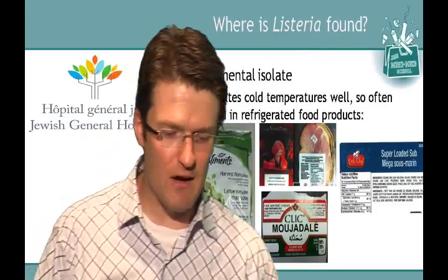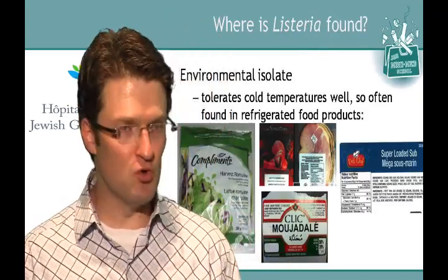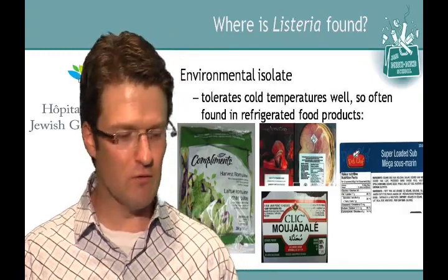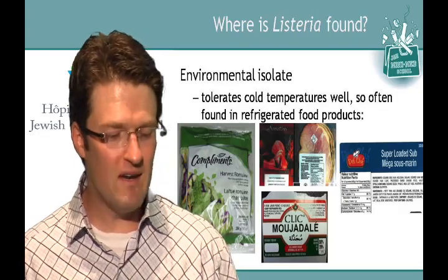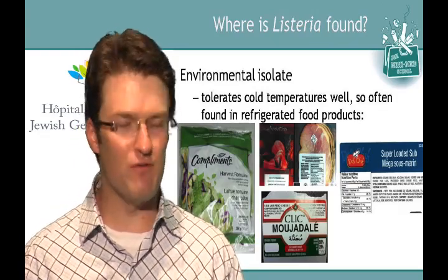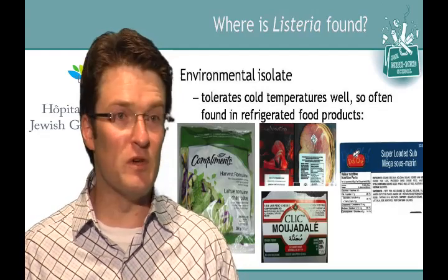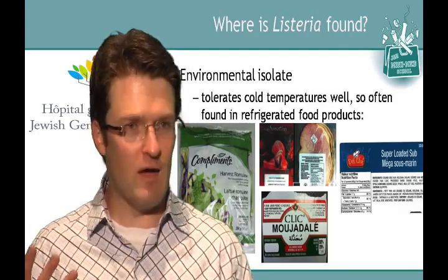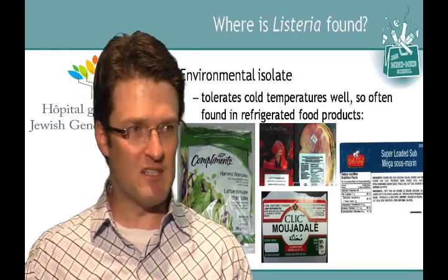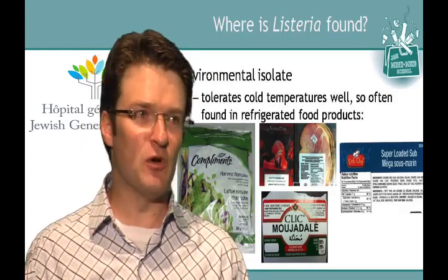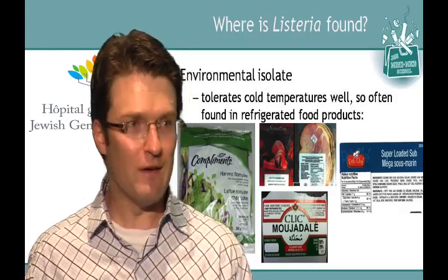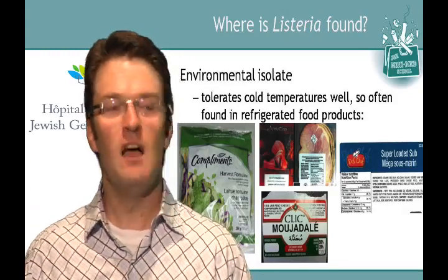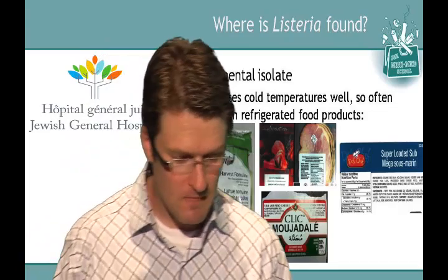Where is Listeria found? Just like C. diff, this is also an environmental isolate — you can find it in soil and in sewage. One neat thing about Listeria is that it tolerates cold temperatures very well. One of the reasons we use fridges is to preserve food, but when you put food with a mix of Listeria and other bacteria in the fridge, the other bacteria replicate very slowly. Listeria loves it — it couldn't care less about being in the fridge and will keep on replicating.